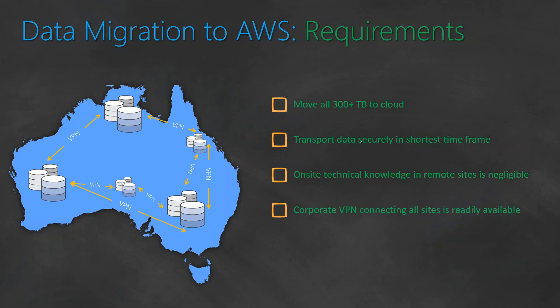The client also had a corporate VPN connecting all the different sites, and said we could leverage it — but with a caveat. During a typical business day, 8 to 12 hours of corporate business traffic meant the VPN could not be used for data movement. We would have to work around business hours and move data only in the remaining time, which imposed a big constraint given the 300-terabyte data size.